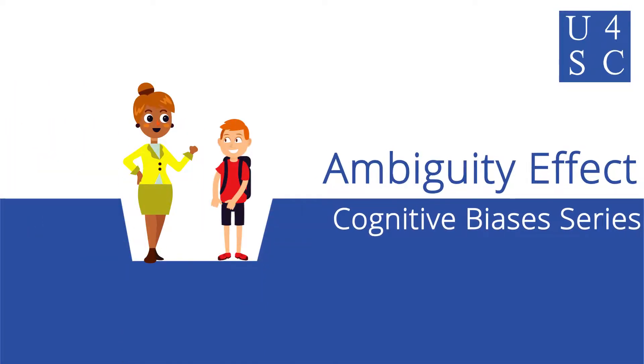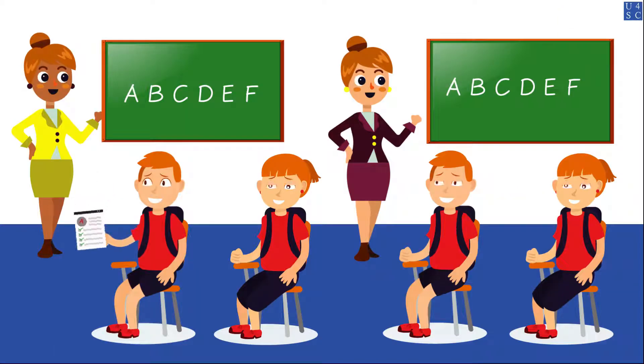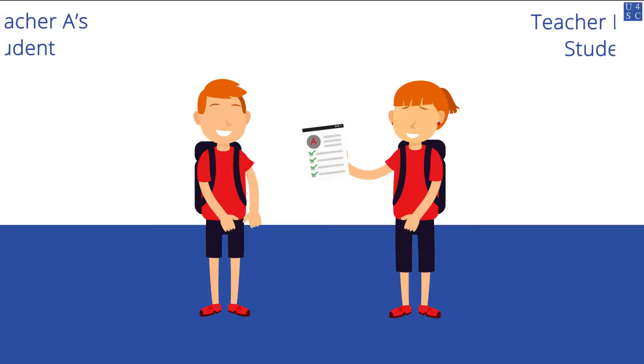Academy for Social Change presents the Ambiguity Effect. There are two teachers teaching the same English class. You're familiar with one teacher because your brother took her class when he was a freshman and passed with an A. You have never met the other teacher and don't know anyone who has taken her class.